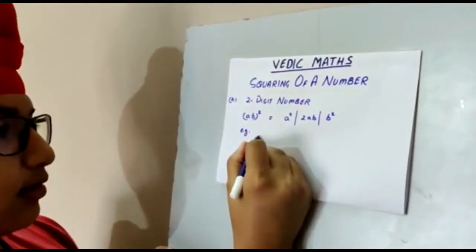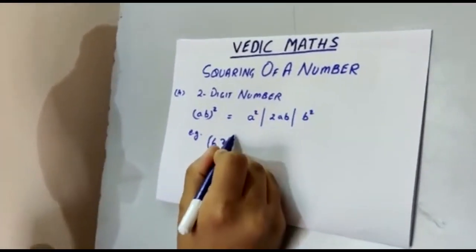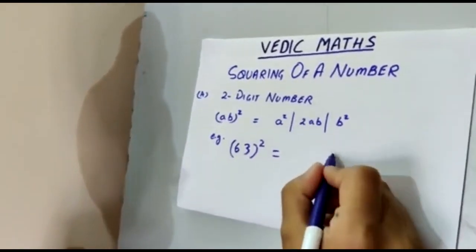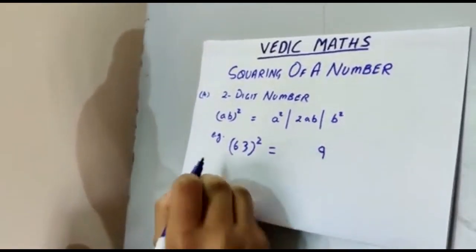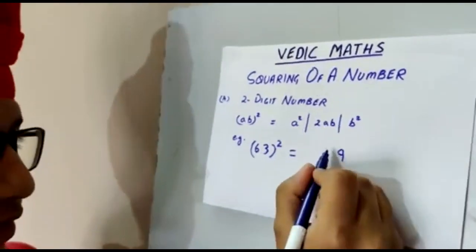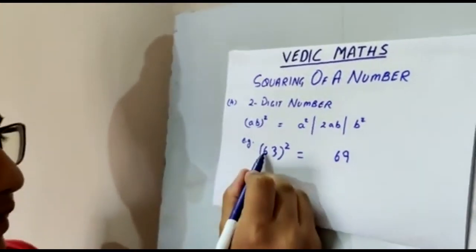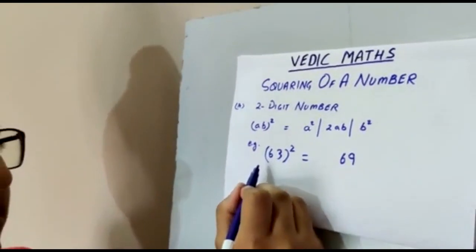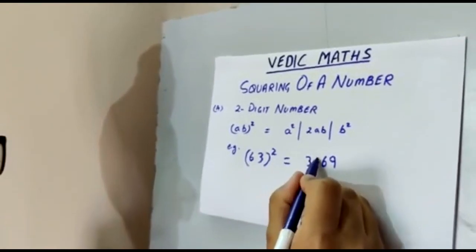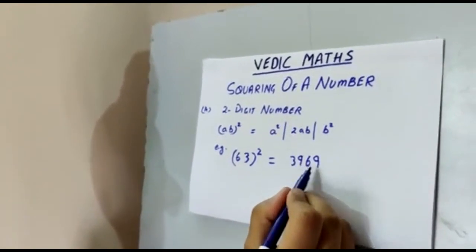For example, the square of 63. So first we do 3 square which is 9. Then we do 6 into 3 which is 18 into 2 which is 36. We write the 6 and take the 3 as a carry. Then we do 6 square which is 36 and we add the 3 carry to it which is 39. So the answer for 63 square is 3969.